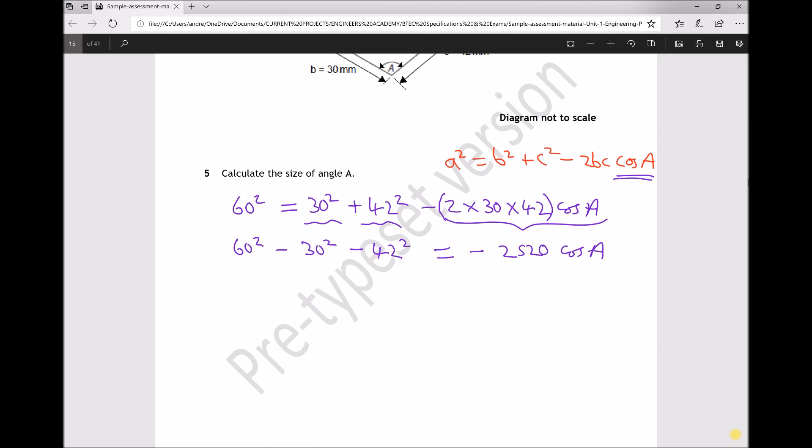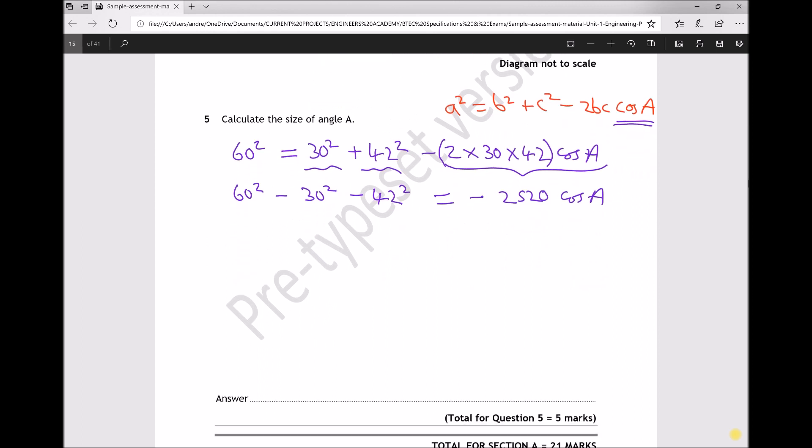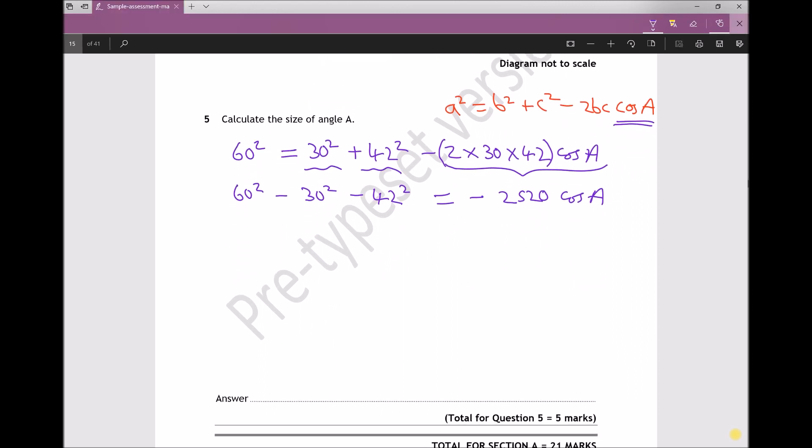What I'm going to do next is simplify this a little bit. I'm going to simplify it by multiplying out my left-hand side. At the moment I have 60 squared minus 30 squared minus 42 squared. If I run that through my calculator, I'll just end up with a number, and that number is 936.